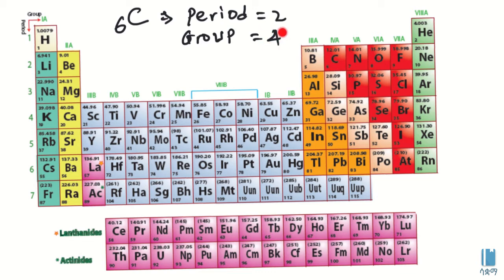A group is a vertical column in the periodic table. Group 2, group 3, group 4 — for example, carbon is in a specific group. Electron configuration is informative for finding the position of an atom.